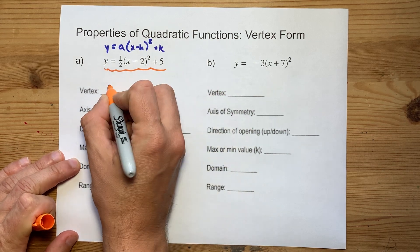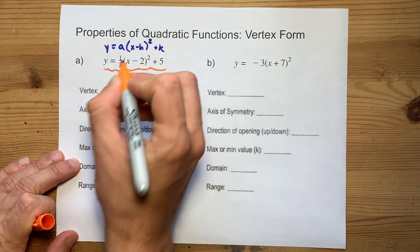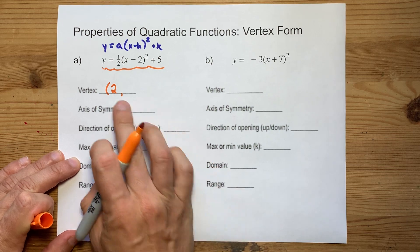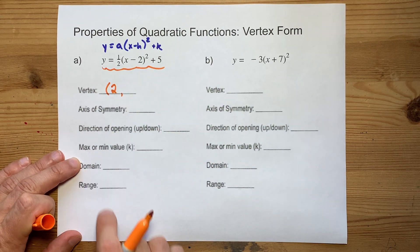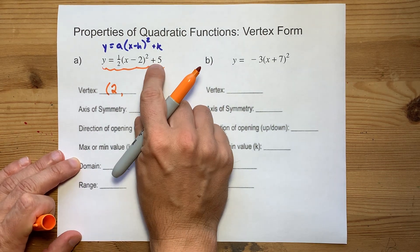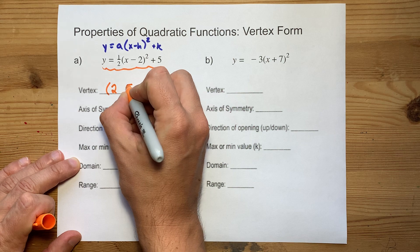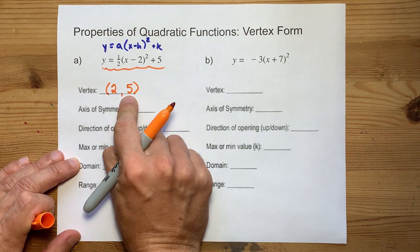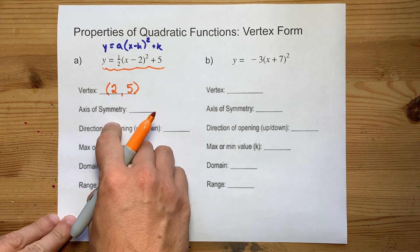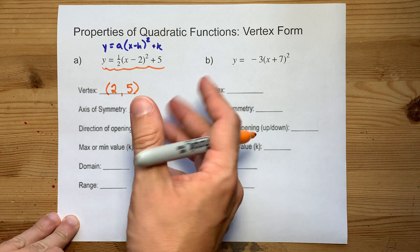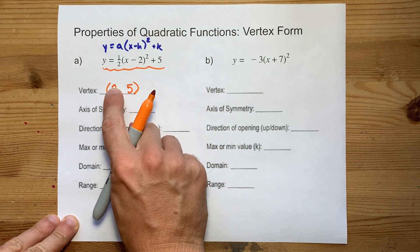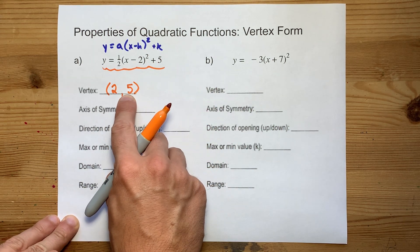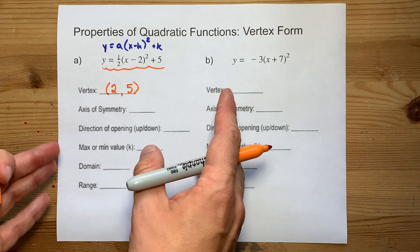This minus 2 is a shift to the right of 2, so the vertex's x-coordinate is positive 2. This plus 5 is a shift up 5, so the y-coordinate of the vertex is 5. The trick is that this sign flips, and this sign is preserved. Always works.